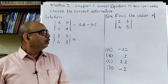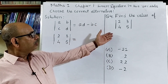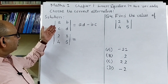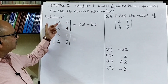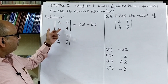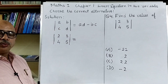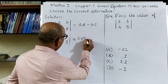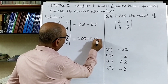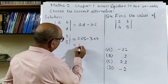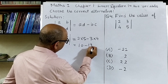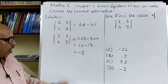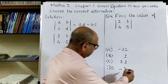Question number four: find the value of the determinant with elements 2, 3, 4, 5. We know that the value of determinant a b c d is a into d minus b into c. So this will be equal to 2 into 5 minus 3 into 4, which equals minus 2. The correct option is D.